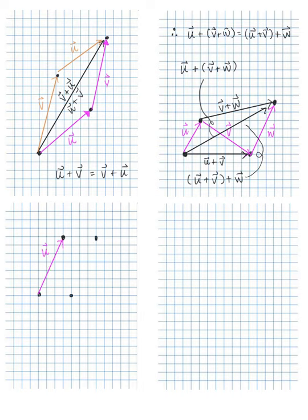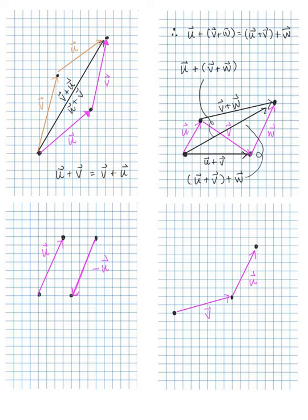Suppose vector U is going in a certain direction. Negative U is parallel to vector U but going in the opposite direction. Here's vector V and vector U. We already know how to add these, so V plus U is this vector here — same thing as U plus V.